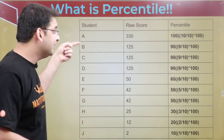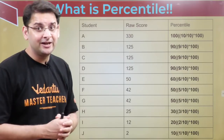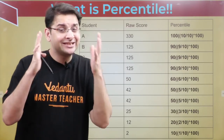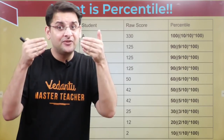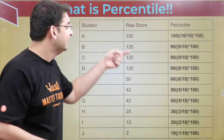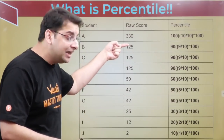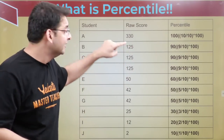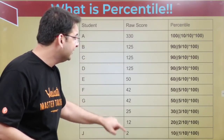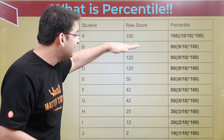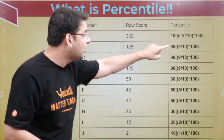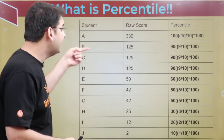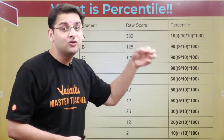Similarly for B, whose score is 125. How many people scored 125 or less? 125 will be included, so that gives us 9 candidates — positions 2, 3, 4, and everyone below. So B's percentile is 9 out of 10 into 100, which is 90 percentile.